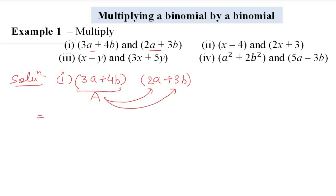We distribute each term: (3a + 4b) multiplied by 2a, plus (3a + 4b) multiplied by 3b.